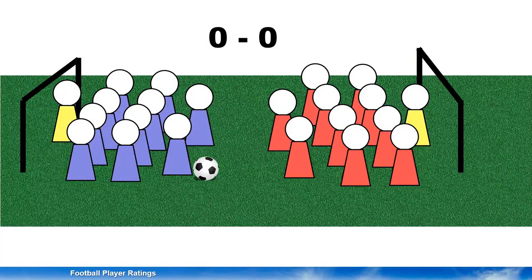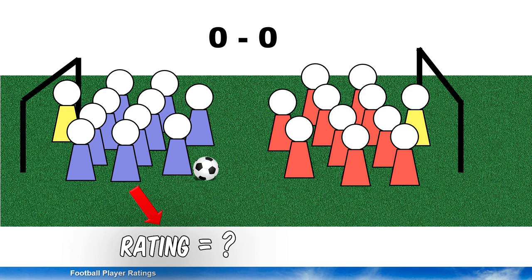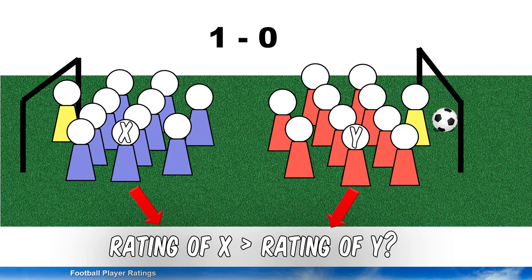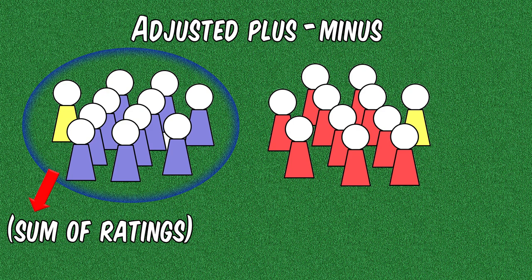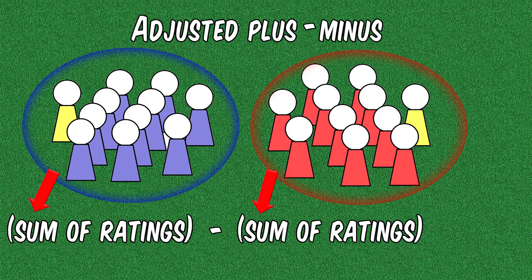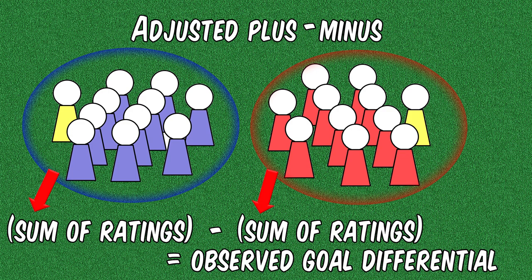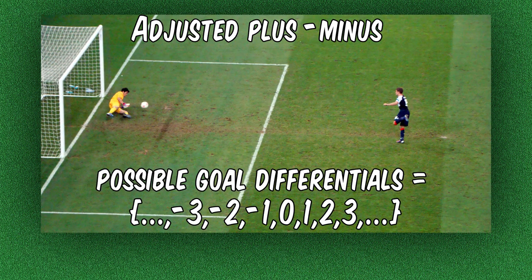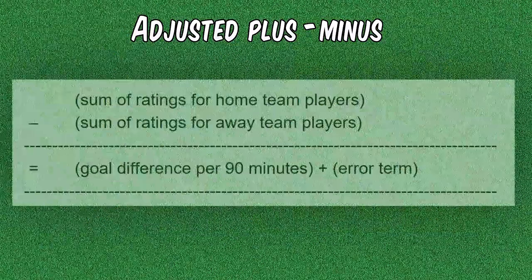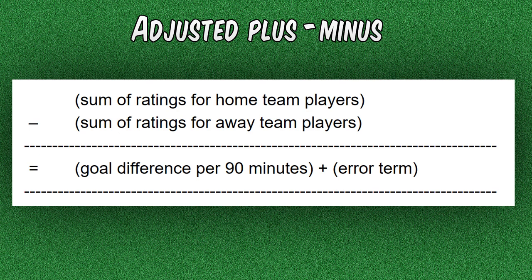Assume that we are observing a match with two teams each having 11 players. We would like to assign ratings to each of the players. If we observe a part of the match, we will see the 22 players move around as they normally do, and in the end, some goals may have been scored. The ratings of the players should somehow reflect these goals. The adjusted plus-minus model says that if we add up the ratings of the players on one team, and subtract the ratings of the players on the other team, the result should ideally be equal to the observed goal differential. In practice, due to the randomness of the game and the fact that goal differentials are integers, the ratings will not perfectly fit the observed goal differentials in all matches. Therefore, the model tries to find the best fit for the ratings by minimizing the errors.